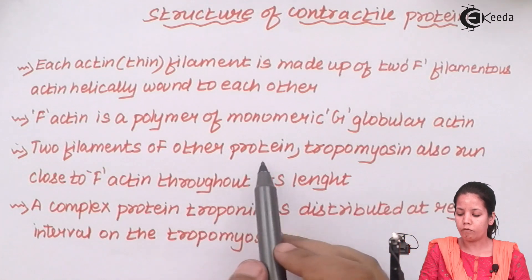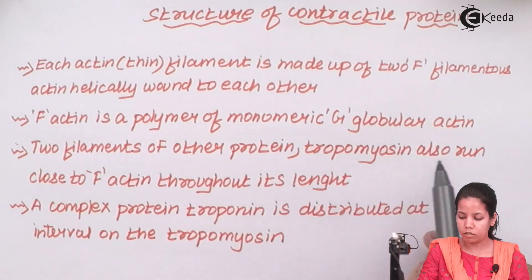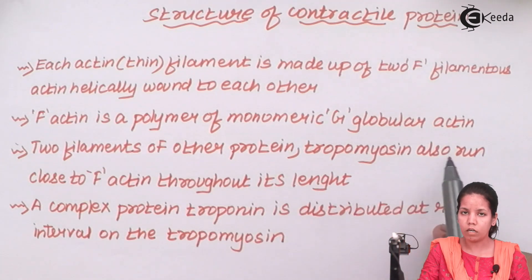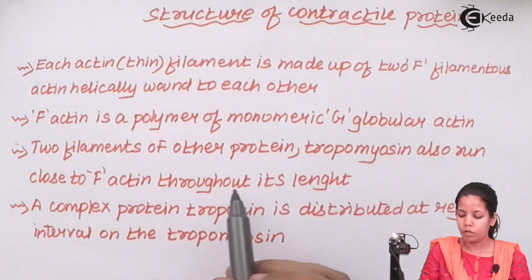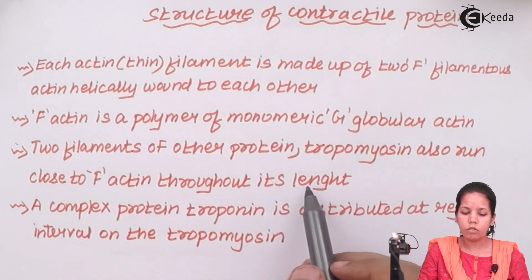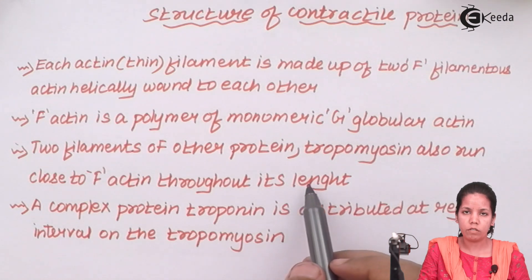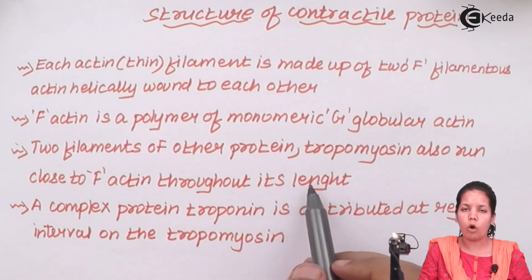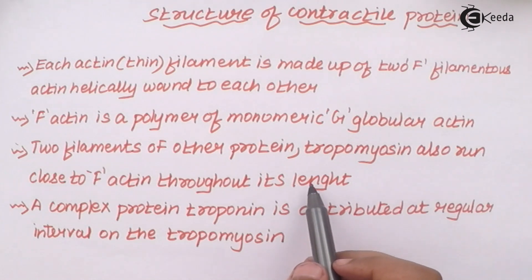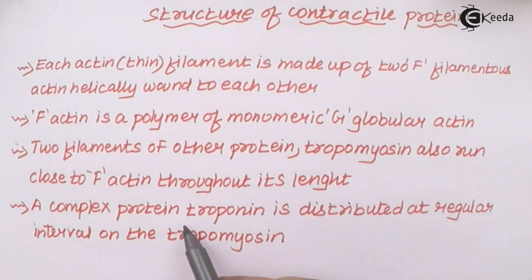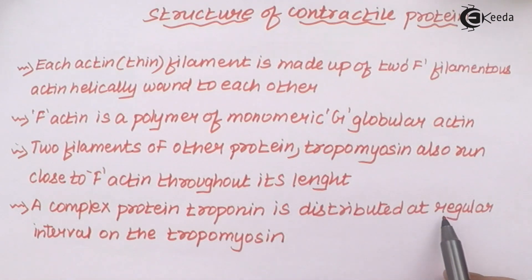Two filaments of another protein, tropomyosin, also run close to your F-actin throughout its length. So all three — troponin, tropomyosin, and F-actin — are embedded together, criss-crossed and helically coiled against each other. A complex protein, troponin, is distributed at regular intervals on the tropomyosin region.